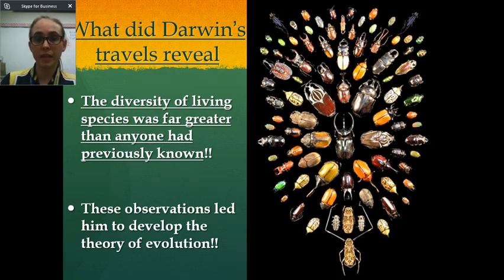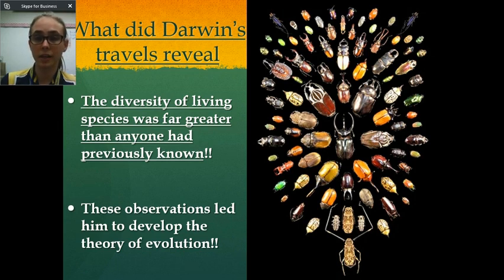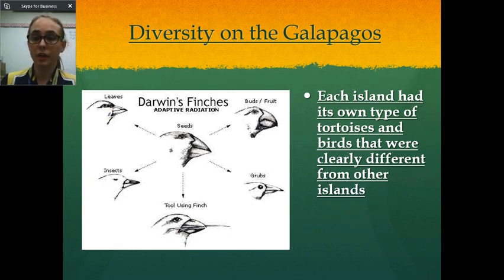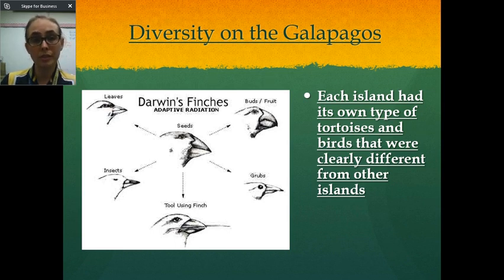He discovered first that the diversity of life or living species was far greater than anybody had previously known. He did a lot of collecting of specimens — birds and insects, lots and lots of organisms. The Galapagos Islands had tons of diversity and tons of animals. One of the things he studied there were the finches, and there were different varieties of finch and different varieties of tortoises on every island. Each island was unique from all of the others.